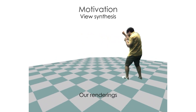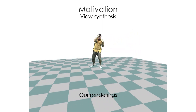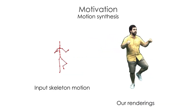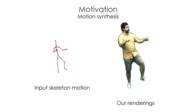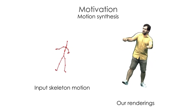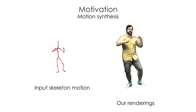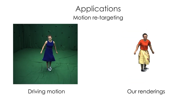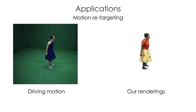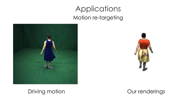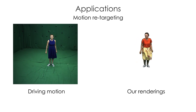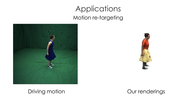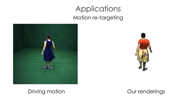Our method enables synthesis of dynamic humans at very high resolutions. Besides novel view and motion synthesis, our method also enables other exciting applications such as motion retargeting. Here we transfer the motion of the actor with the blue dress onto the actor with the yellow skirt. Note that our method can faithfully synthesize the motion and view-dependent appearance effects, as well as very detailed wrinkle and texture patterns.